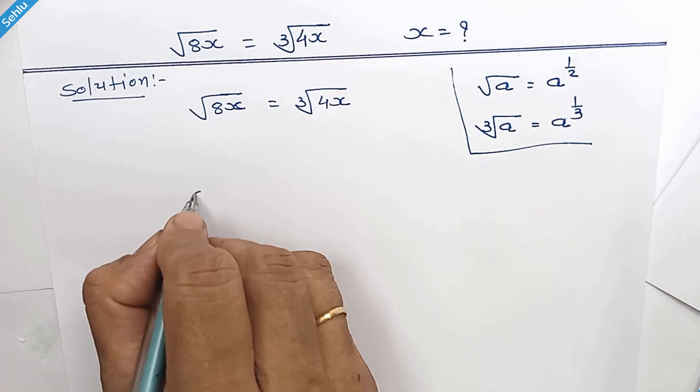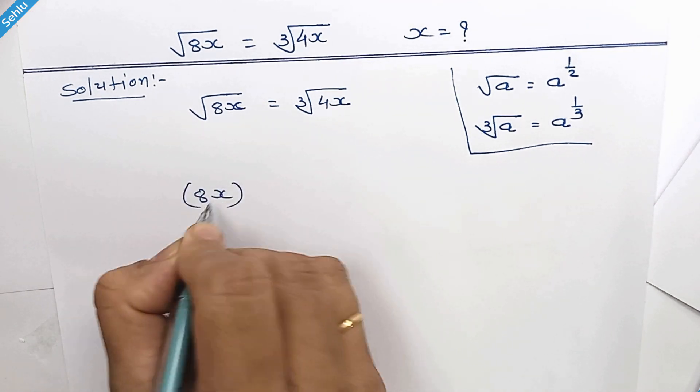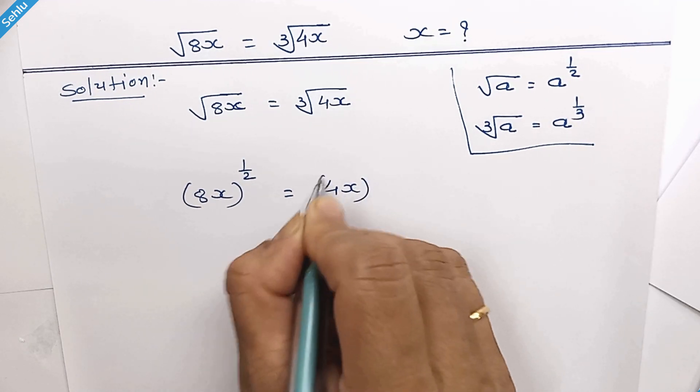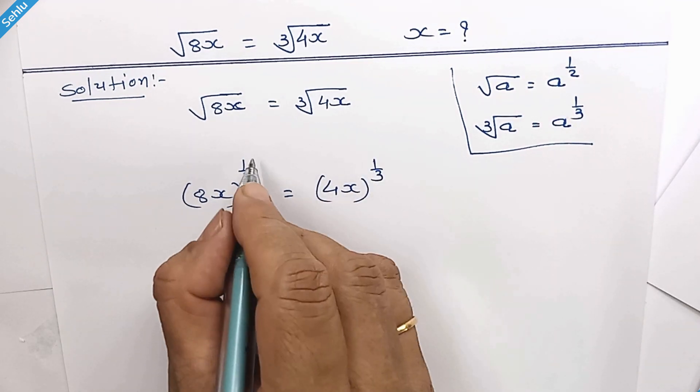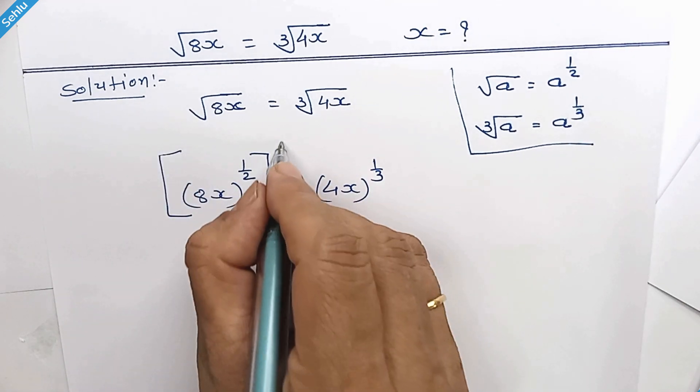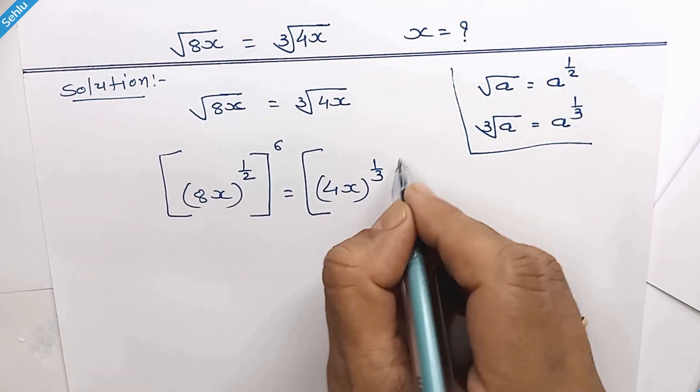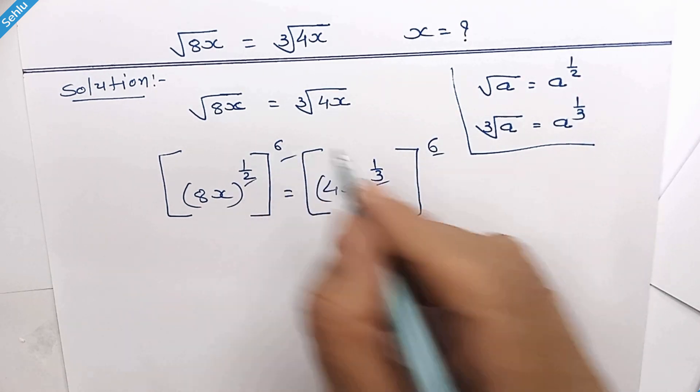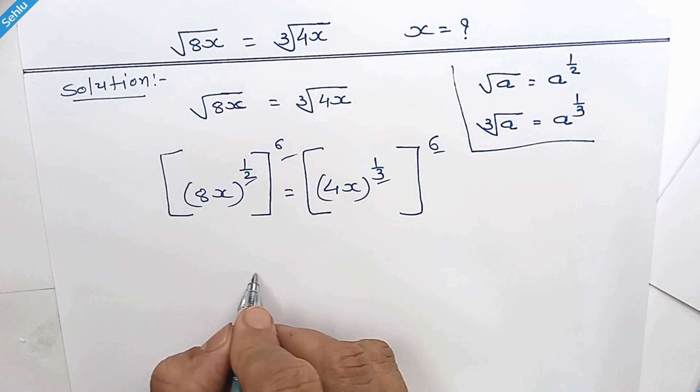So this part can be written as... If we raise 6 as an exponent both the sides, this 2 and this 2 can multiply. So it will be...